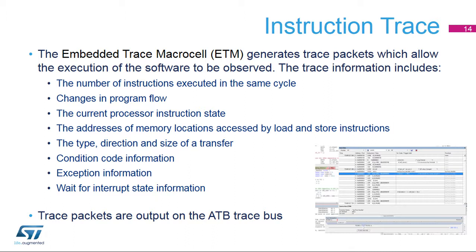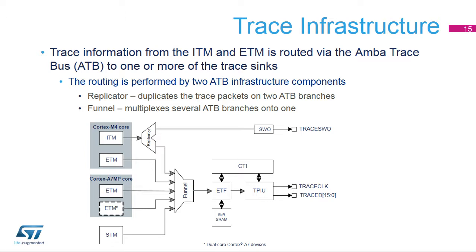In the STM32 MP1 series, the Embedded Trace MacroCell (ETM) is configured for instruction trace only — data accesses are not included in the trace information. The ITM, ETM, and STM generate trace streams which are combined using the trace funnel. Some funnel parameters can be modified, for example the number of bytes received on one input before switching to another. The less switching that occurs, the lower the overhead, but at the cost of increased latency. It is also possible to filter trace; for example, the ITM trace can be removed from the TPIU and output on the SWO instead.